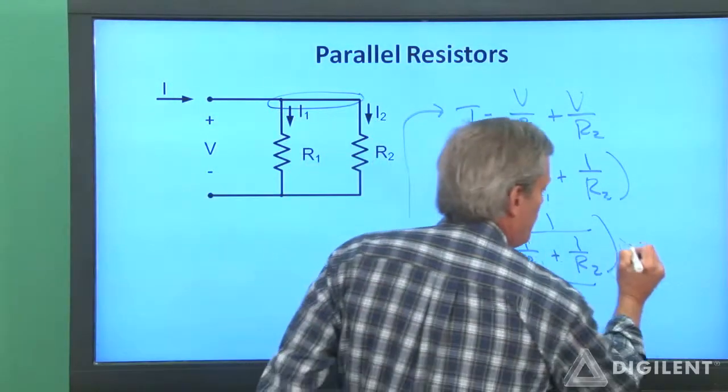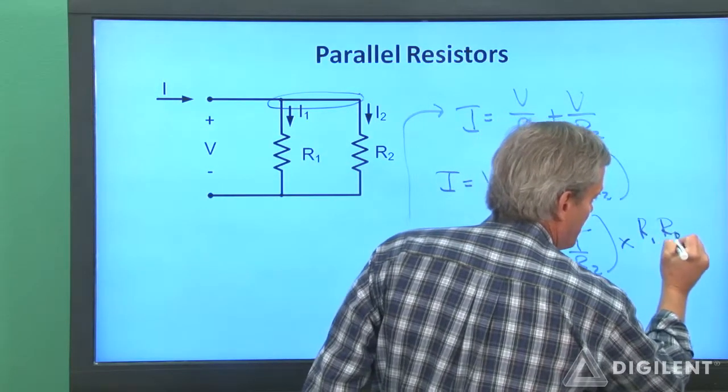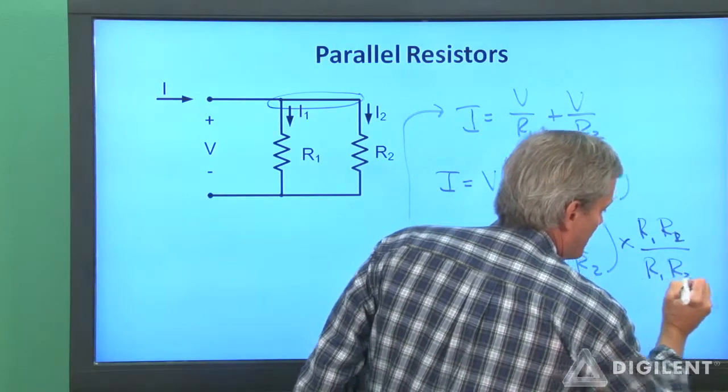If I multiply this whole thing by 1 in the form of R1 times R2 over R1 times R2, I get V is equal to I times R1 times R2 over R2 plus R1.